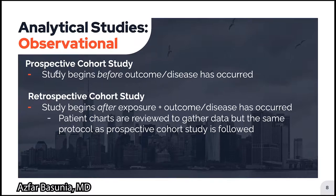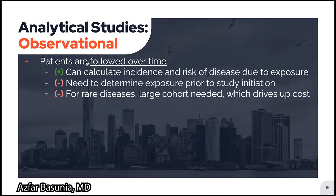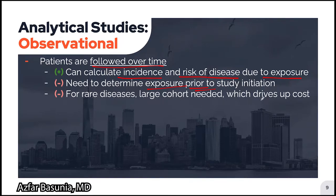Cohort studies can be divided into two types. A prospective cohort study begins before the outcome or disease has occurred. In a retrospective cohort study, the study begins after the exposure and the outcome has occurred, and patient charts are reviewed to gather relevant data following the same protocol. The primary advantage of following patients in a cohort study is that it allows us to calculate the incidence and risk of disease due to exposure. Two primary drawbacks are the need to determine exposure prior to initiation, and for rare diseases, a large cohort may be required, which drives up the cost.